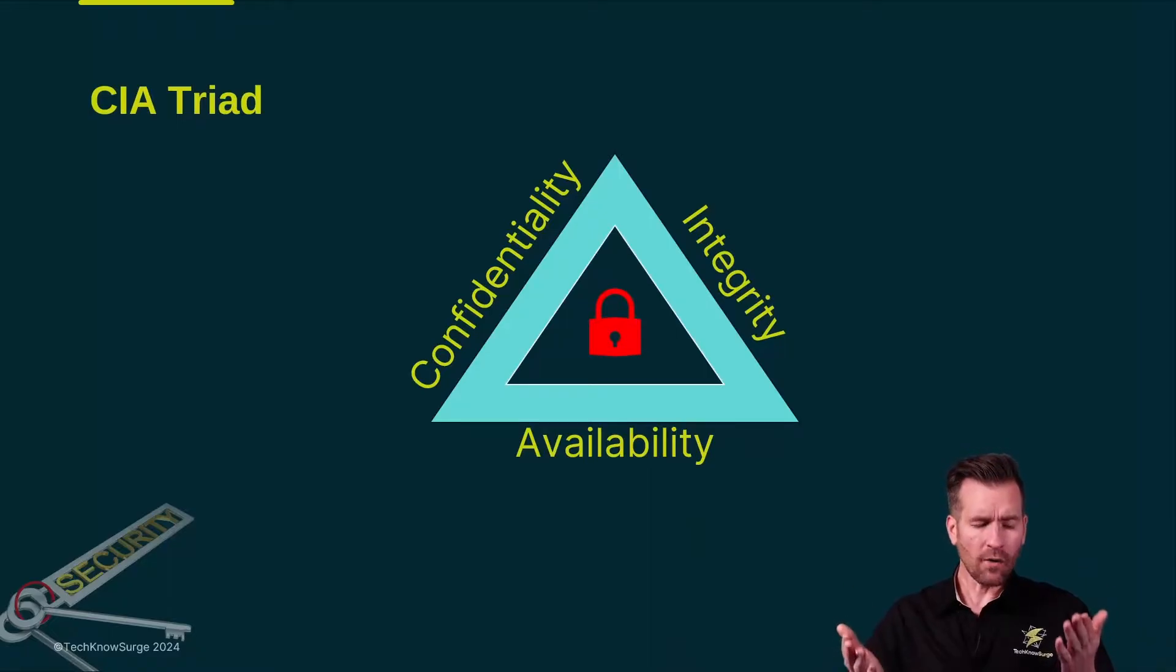In a prior video, we already talked about the CIA triad. That is confidentiality, keeping things secret, the integrity, making sure that data doesn't change and that it's accurate, and then also availability, making sure that data or those services are up and running.